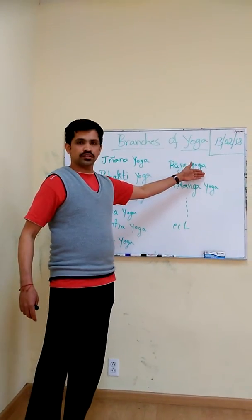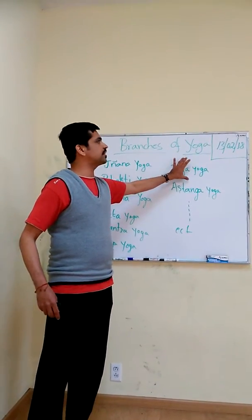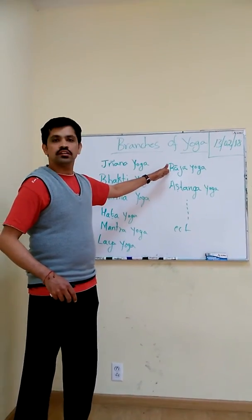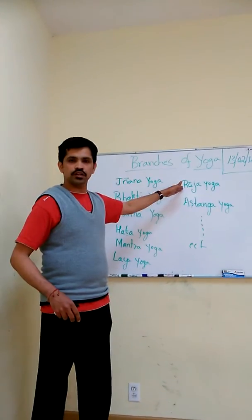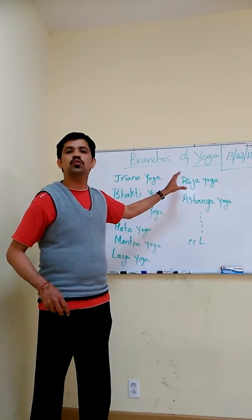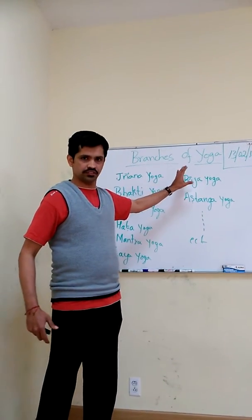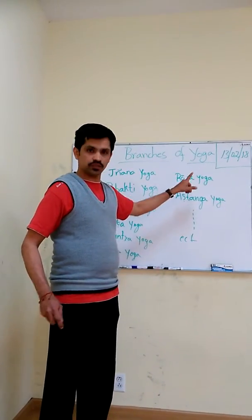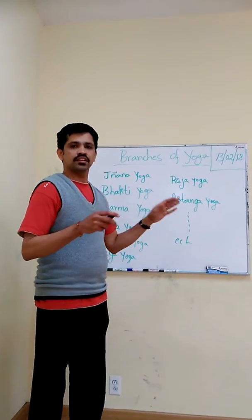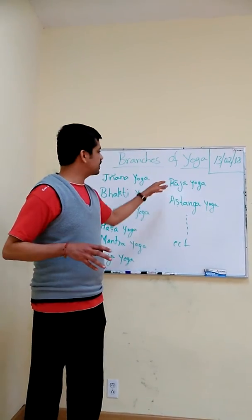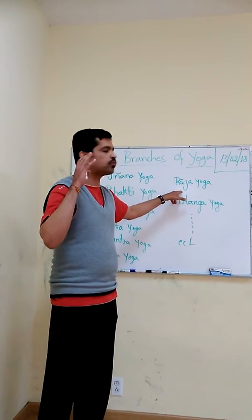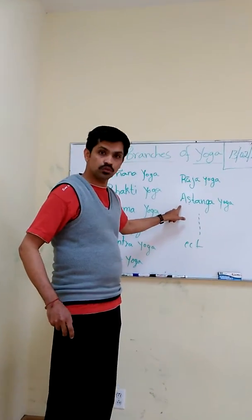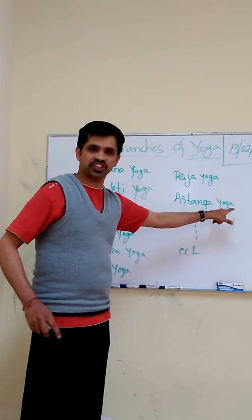The Raja Yoga is the highest state of Yoga. The main aim of Hatha Yoga is reaching Raja Yoga. In the absence of these three things, that state of mind is called Raja Yoga.